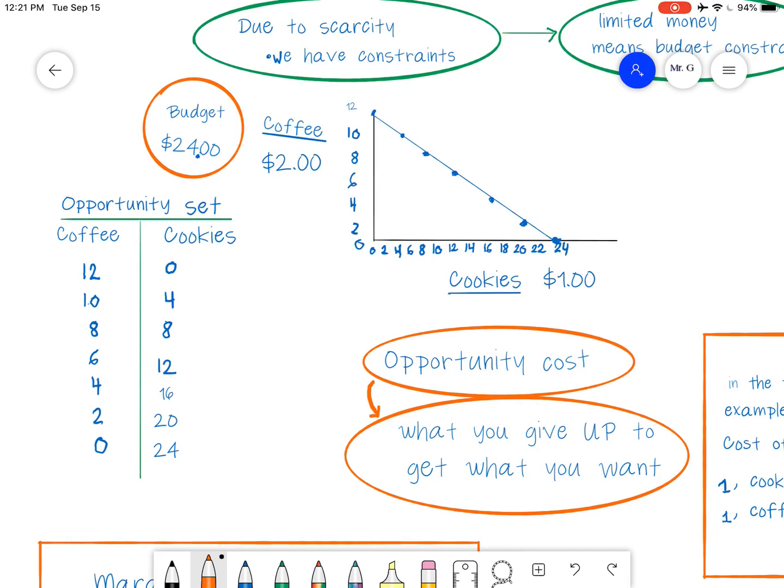So let's look at the opportunity set. Well, we know that cookies are $1 and coffee is $2. So if coffee is $2, we can get 12 coffees. 12 times 2, $24. Our whole budget is spent. We have nothing left to buy cookies with. So zero cookies.